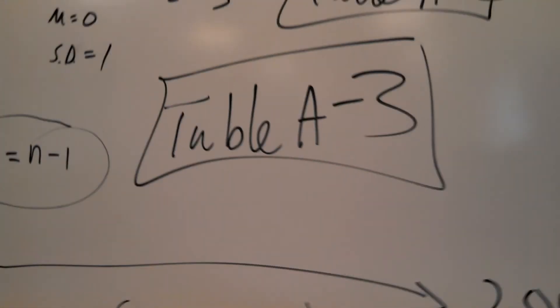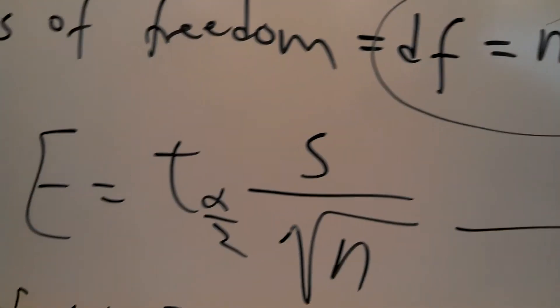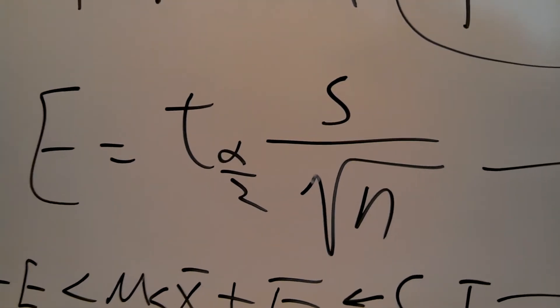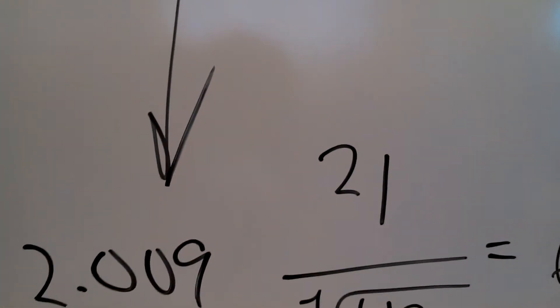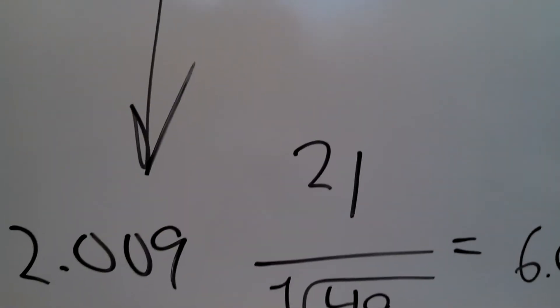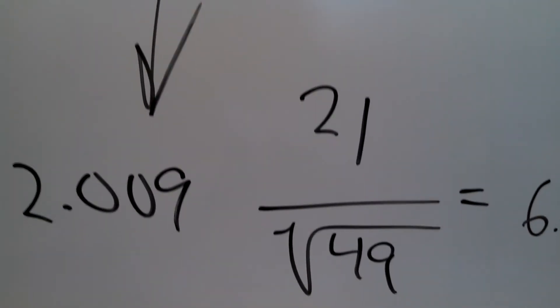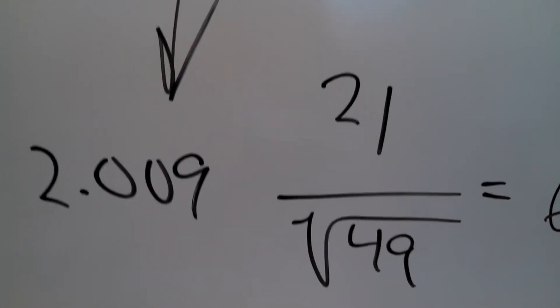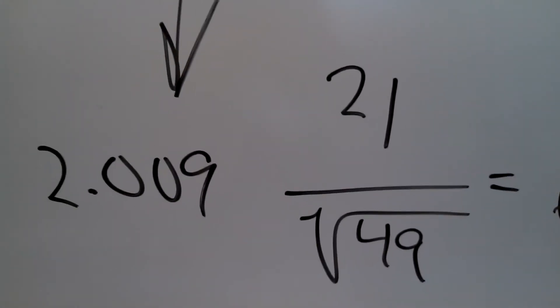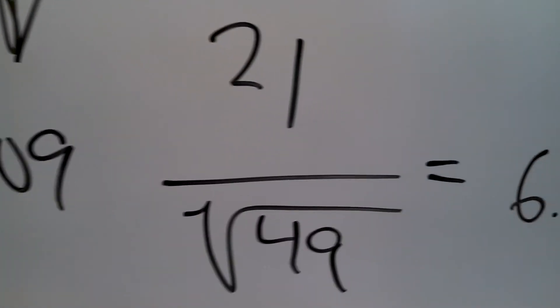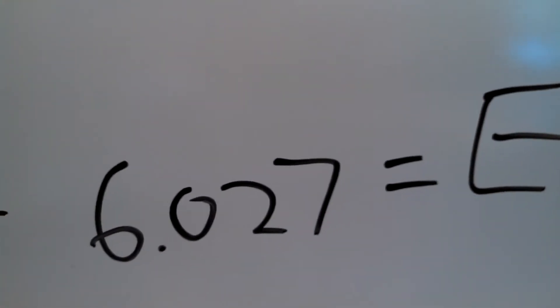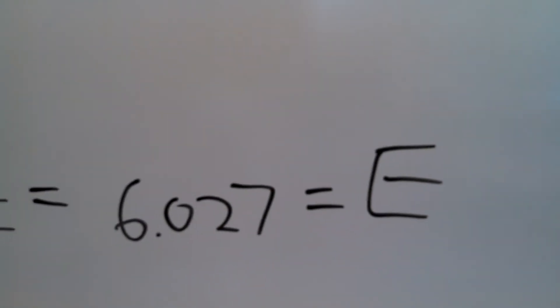Substituting into the formula, we have E equals 2.009 times 21 — which is S, the standard deviation of the sample — divided by the square root of 49, which is N. Putting this into the calculator, we find that the margin of error E equals 6.027.